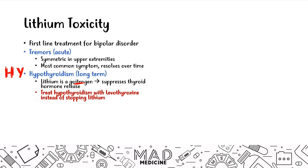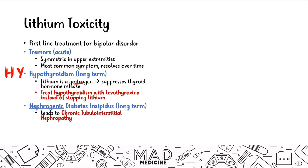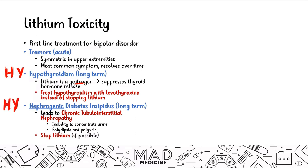The next high-yield side effect is nephrogenic diabetes insipidus — another long-term side effect of lithium usage. This occurs because of chronic tubular interstitial nephropathy, which leads to an inability to concentrate urine, causing polydipsia and polyuria. In this case, you do want to stop lithium if possible, but the main cause of nephrogenic diabetes insipidus in bipolar patients is going to be lithium toxicity specifically.